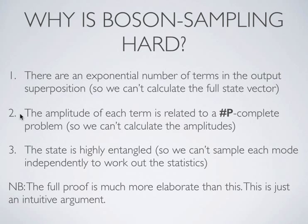The second intuitive reason is that the amplitude of each term in the output superposition is related to a #P-complete problem, meaning we can't classically calculate the amplitudes. The third reason is that the state is highly entangled, which means we can't sample each mode independently to work out the statistics — if there were no entanglement, we could just take the product of independent mode probabilities. Jointly, these three reasons give us a good intuition for why this is a hard problem, though the full proof is much more elaborate.